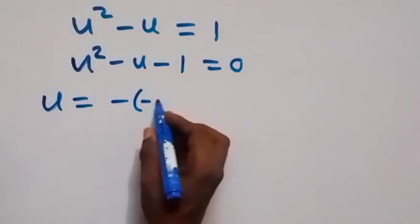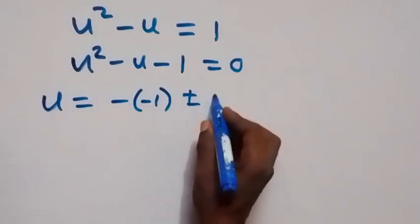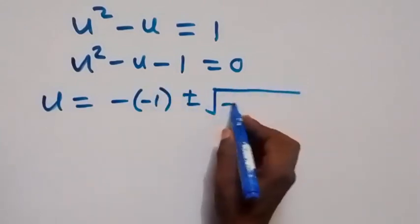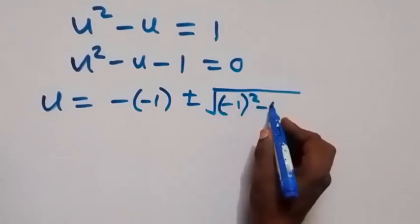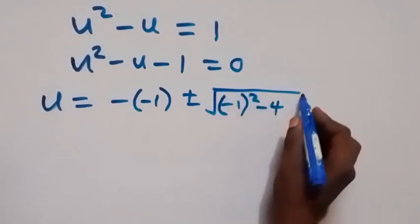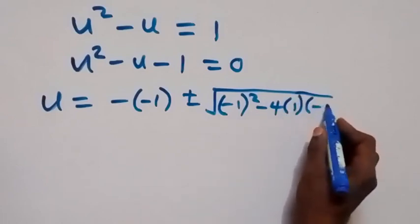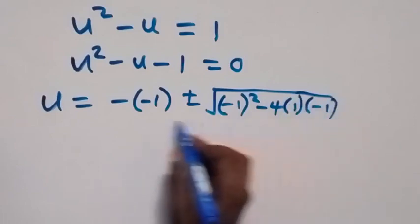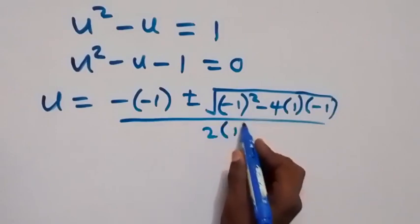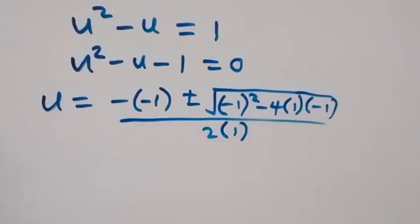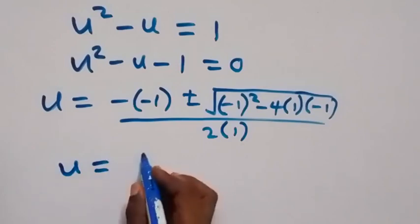We can solve this quadratic equation using the quadratic formula. So u equals minus b plus or minus square root of b squared minus 4ac, over 2a. Here b is minus 1, a is 1, and c is minus 1, over 2 times 1.